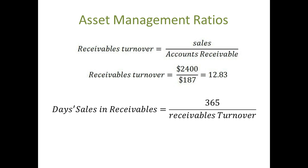Receivables Turnovers make more sense if we convert them into days. Therefore, we can do 365 days divided by the Receivables Turnover, and this would be our Days Sales in Receivables. In our example, we'll do 365 days divided by our Receivables Turnover of 12.83. This says that on average, we collect our sales in 29.67 days. This is often called the average collection period. This ratio also implies that there are 29.67 days worth of sales outstanding.